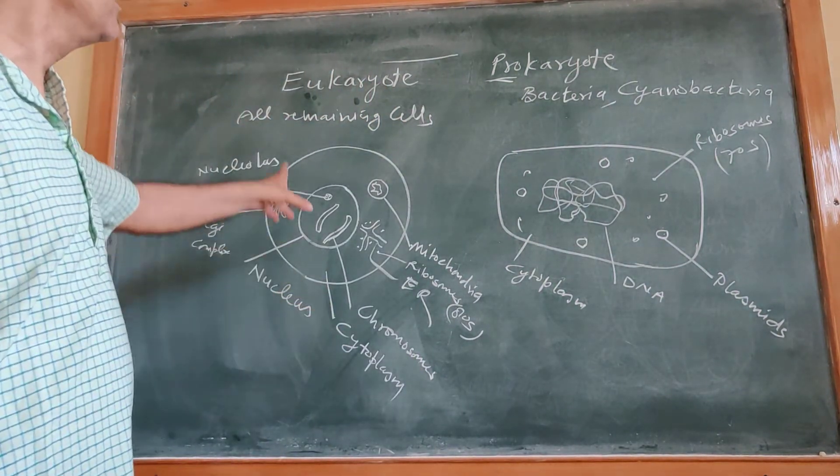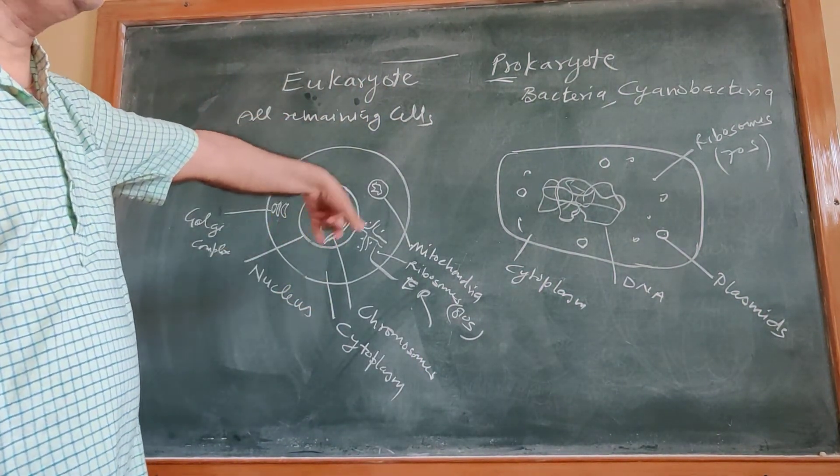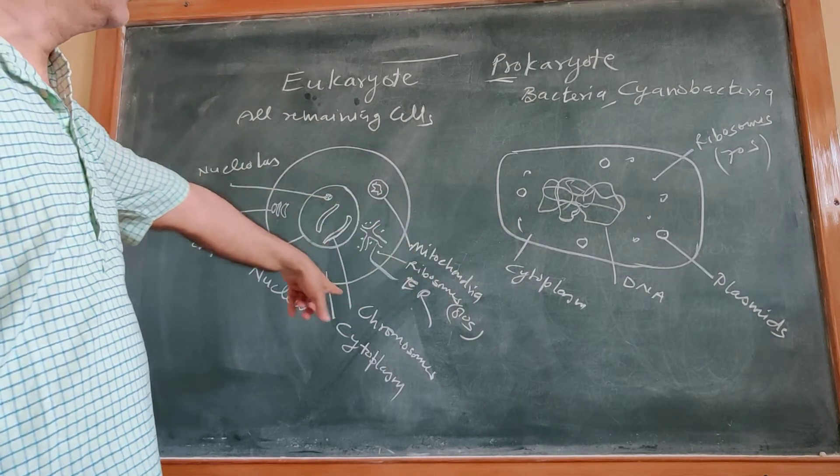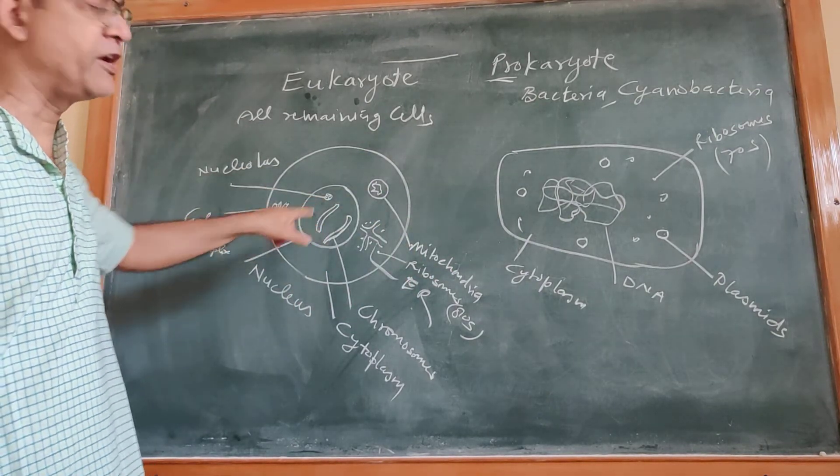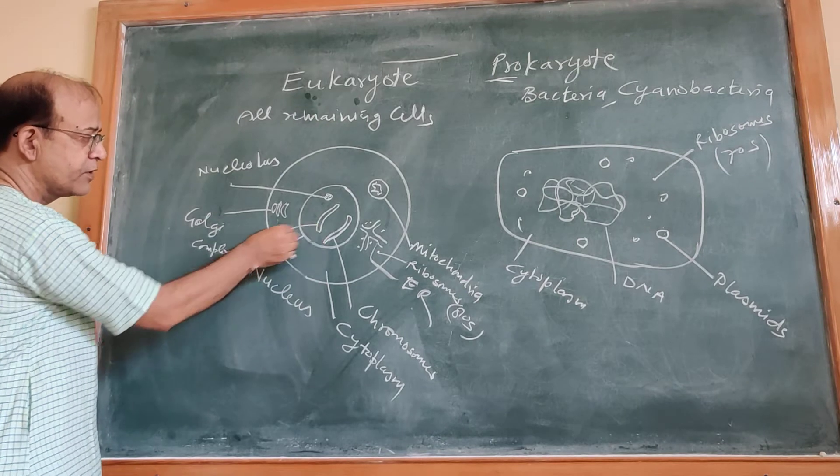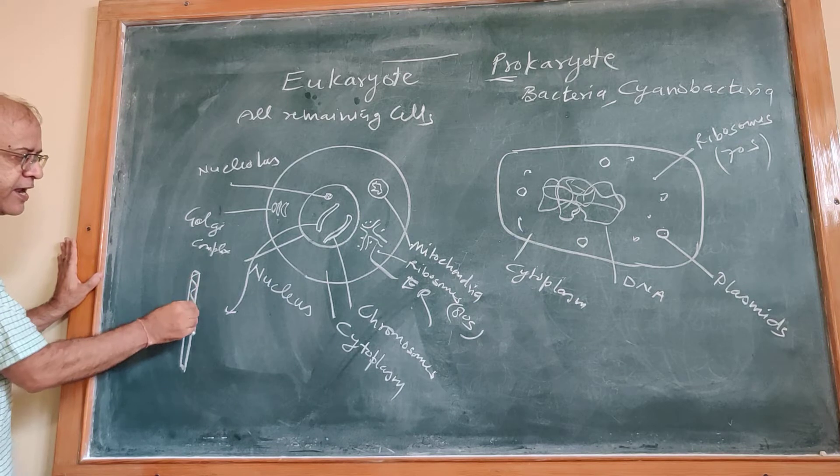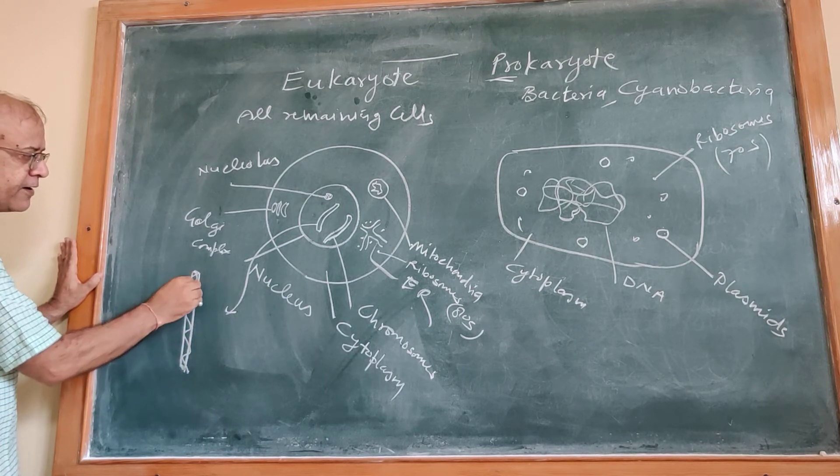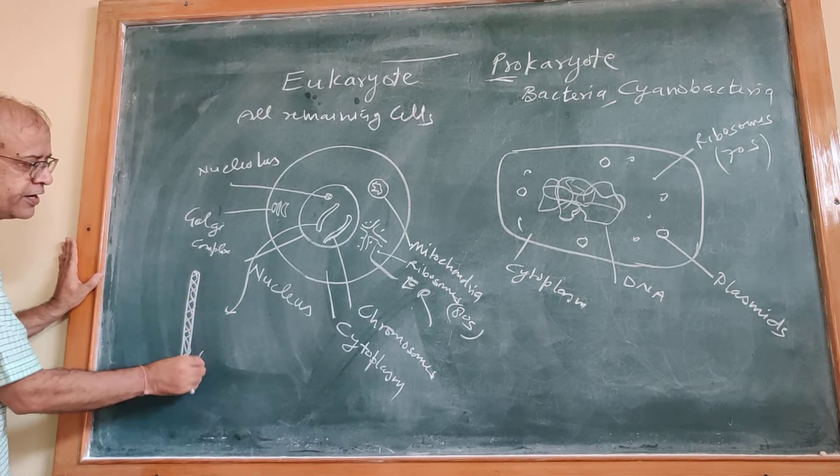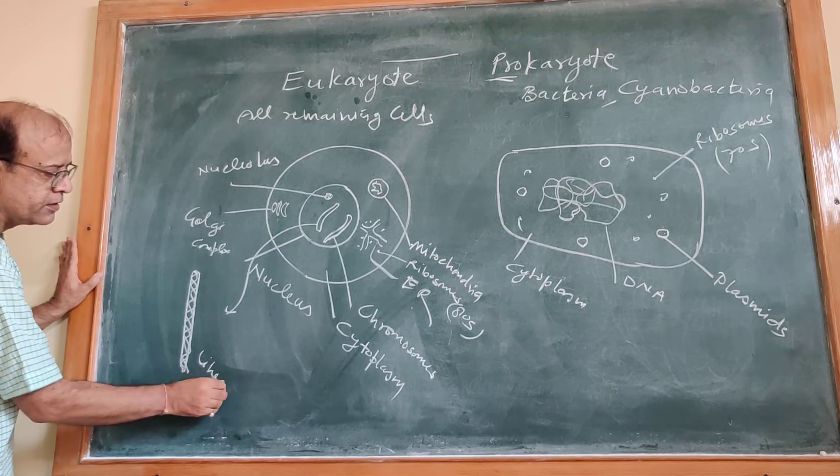So you can compare between a eukaryotic cell and prokaryotic cell. Now, if you see its genetic material. Here, chromosome. The DNA is present. This DNA is linear.